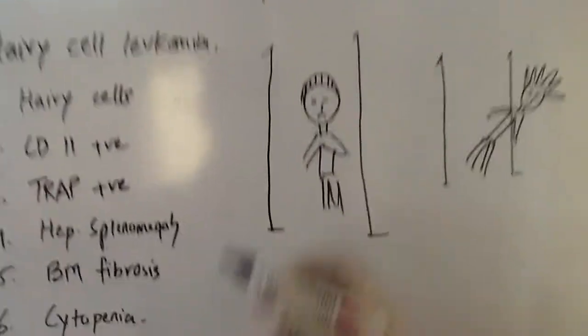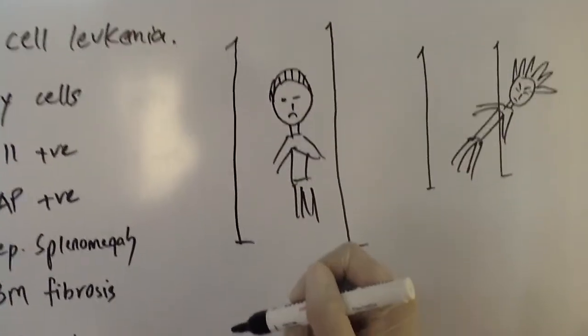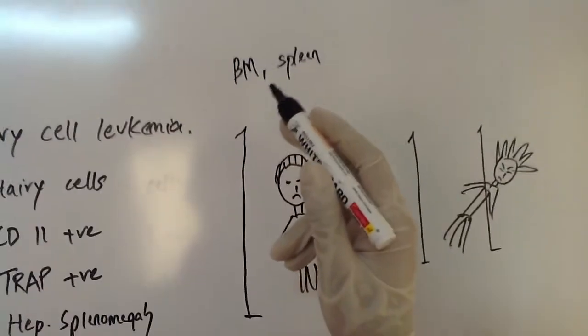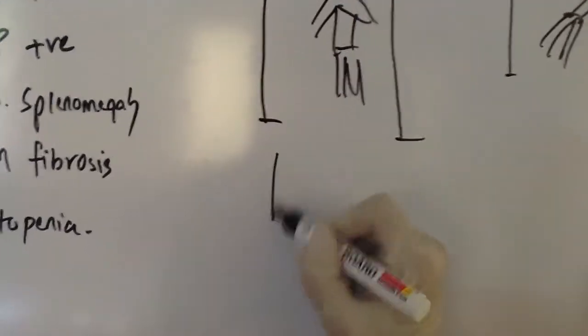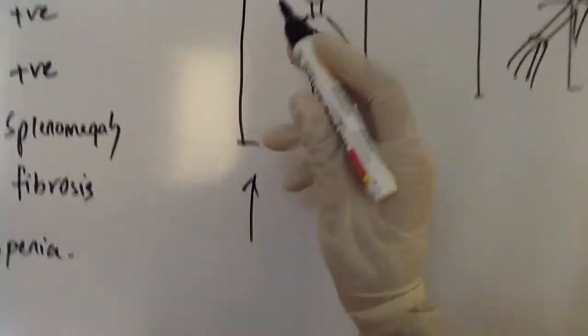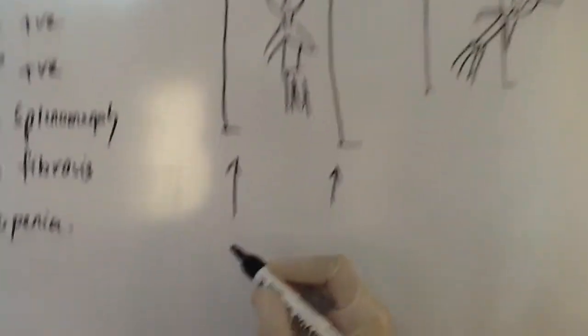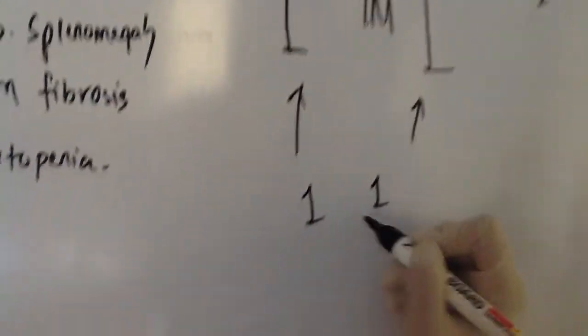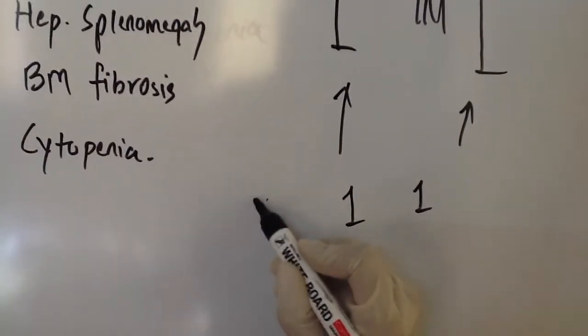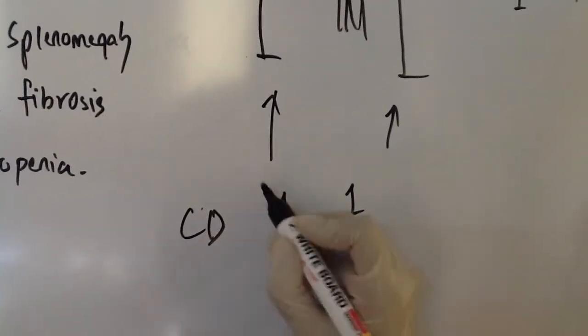And imagine the vertical bars when the lymphocyte was trapped inside the bone marrow and the spleen. The vertical bars actually look like 11. So it's associated with CD11 positivity.